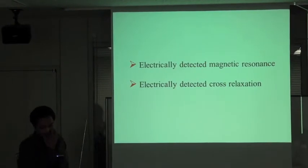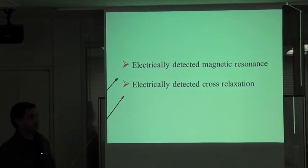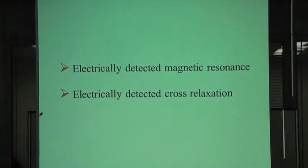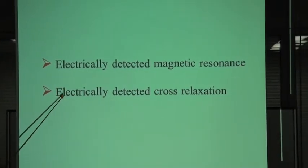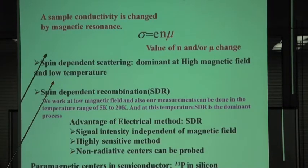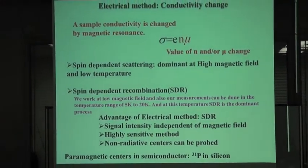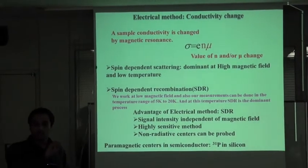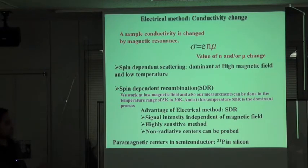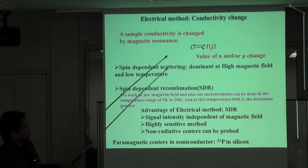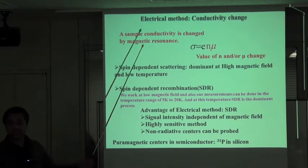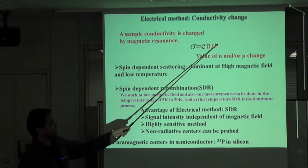My talk will be on two topics: electrically detected magnetic resonance and electrically detected cross relaxation. In the electrical method, we monitor the conductivity of the sample under magnetic resonance conditions. The change in conductivity can be due to N, which we call the carrier density, or due to a change in the mobility.